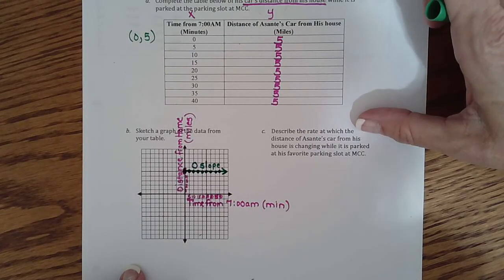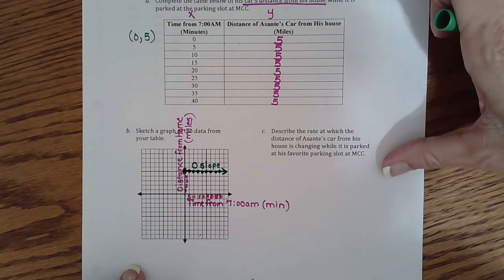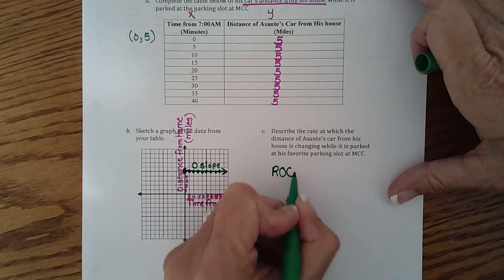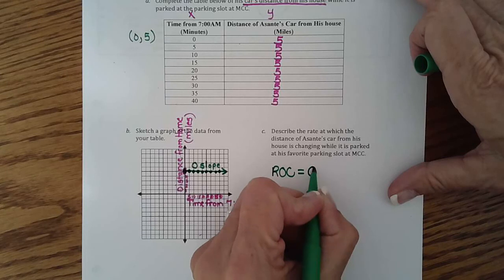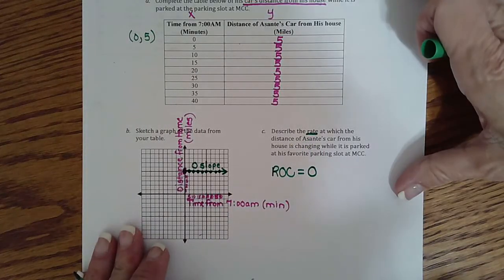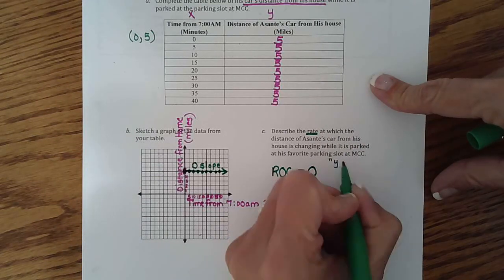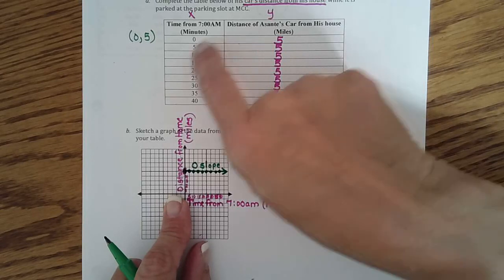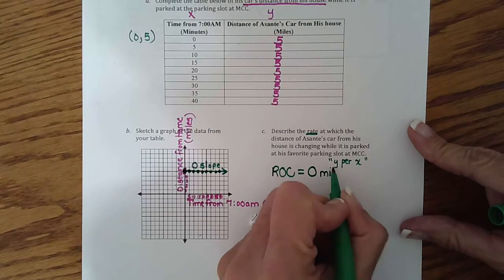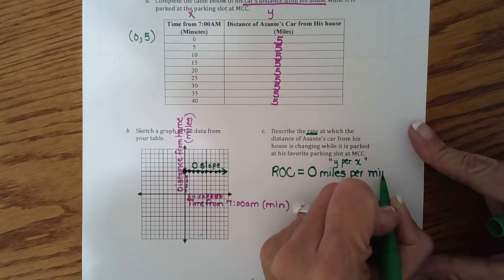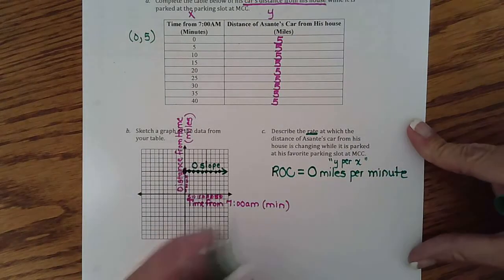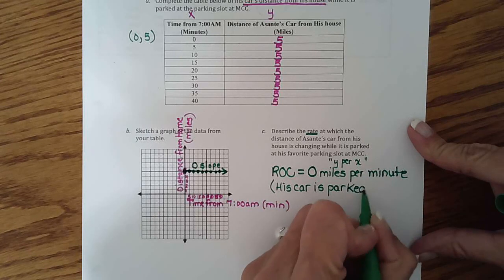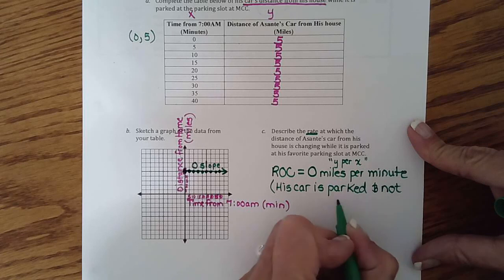So now it's asking us describe the rate at which the distance from his house is changing. So what do you think? The rate of change would be the same as slope, right? Zero, because it said rate. That's how we knew to write rate of change. Now we have to label it. And remember, it's always labeled y per x. So miles per minute. So zero miles per minute. And that's because his car is parked and not moving. So that means he's going zero.